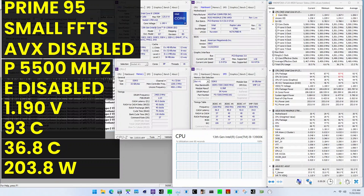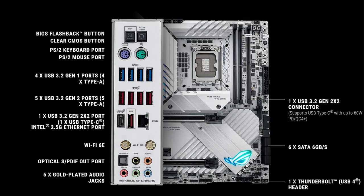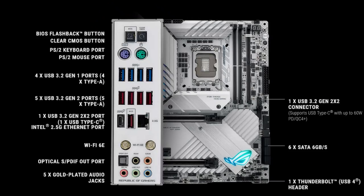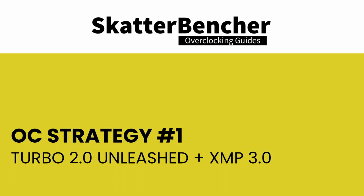Now, let us try our first overclocking strategy. Before we get going, make sure to locate the CMOS Clear button. Pressing it will reset all your BIOS settings to default, which is helpful if you want to start your BIOS configuration from scratch. The Clear CMOS button is located on the rear I/O panel. In our first overclocking strategy, we take advantage of unleashing the Turbo Boost 2.0 power limits and enabling Intel Extreme Memory Profile 3.0.